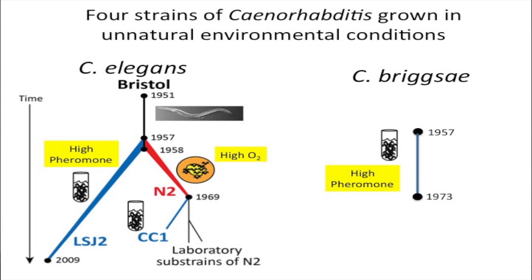One main selection pressure in liquid cultures was high pheromone levels, as animals were grown this way for weeks to months. On plates, high oxygen levels — 21% oxygen — were likely an important selective pressure, very unnatural compared to the ~10–12% oxygen found in the wild. We also have examples in C. briggsae, a closely related species, and CC1, a strain that grew for about four years in liquid culture.